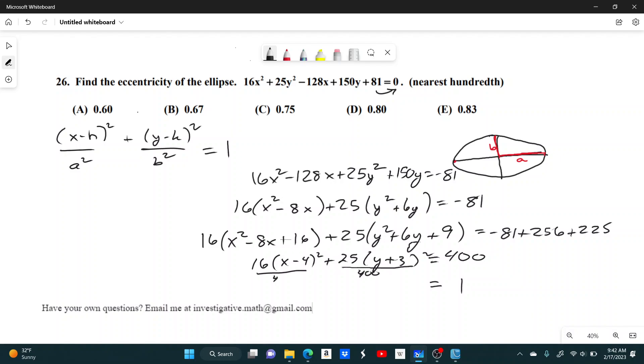If I divide this by 400, and I divide this by 400, I can actually get it into this form by saying, well, 16 over 400, that'll simplify to 25. So this simplifies to x minus 4 squared over 25 plus, and then 400 over 25, that simplifies to 16, which is y plus 3 squared over 16, equals 1. So now we have this in the standard form.